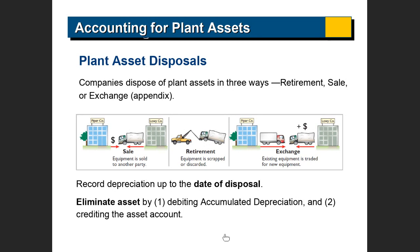If you exchange and you have to pay cash, then in addition to removing the asset you have to credit cash. If you exchange and you get cash, that means the value of the equipment you're getting is less than the value of the equipment you're giving — that's why you're getting cash, and in that case you debit the cash. We're going to look at an example for all of these things.